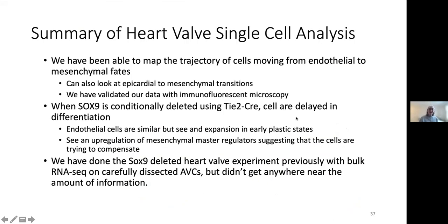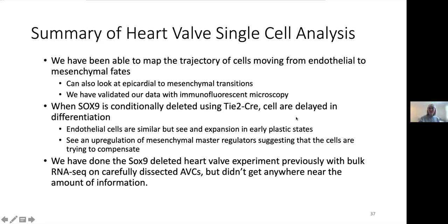In summary, we've been able to map the trajectory of cells moving from endothelial to mesenchymal fates in the heart valves. When SOX9 is conditionally deleted, the cells seem to be delayed in differentiation, endothelial cells are similar but we see an expansion in those early plastic states, and we see an upregulation of mesenchymal master regulators. Previously, we had done SOX9-deleted heart valve experiments on bulk RNA-seq from dissected atrioventricular canals, but we didn't get anywhere near the amount of information as we got from this single cell analysis.